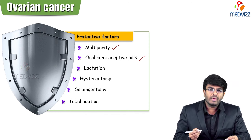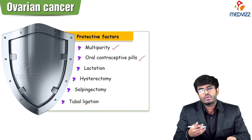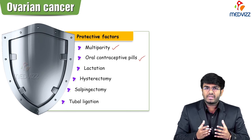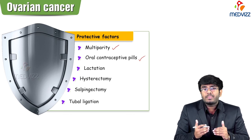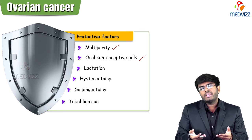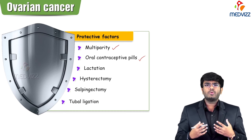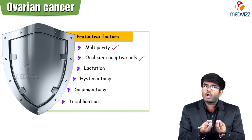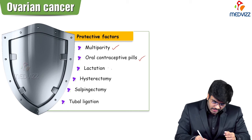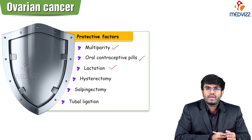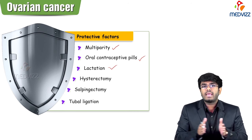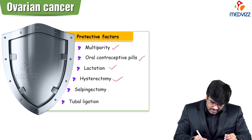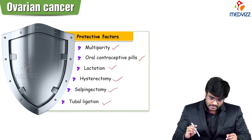Oral contraceptive pills are also a protective factor. Combined estrogen-progesterone pills are more progestogenic and create a pseudo-pregnancy state. Taking oral contraceptive pills causes anovulation — if there is no ovulation, the ovaries are not under stress. Lactation is also a protective factor: lactational amenorrhea gives the ovaries a break to relax.